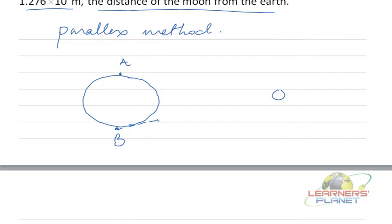From point B, if you observe any point on moon and from point A, if you observe the same point on the moon, this angle theta is given as 1 degree and 54 minutes.